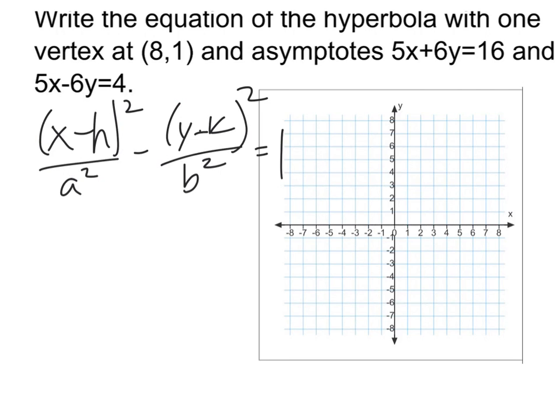We're going to find it, but one thing that we need is the center. The center is going to be where the two asymptotes intersect. There's a few pieces to this puzzle, that may be the first one that I do.